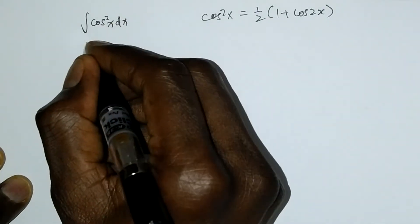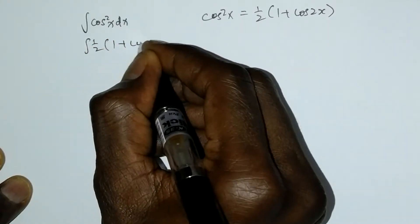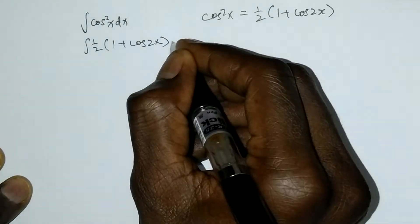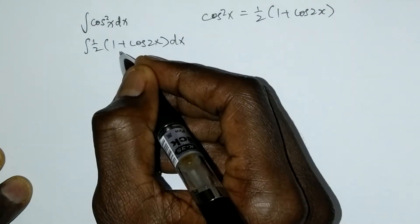Let's substitute. So you integrate 1/2(1 + cos2x)dx. This is a constant, you can factor out 1/2 of integral (1 + cos2x)dx.